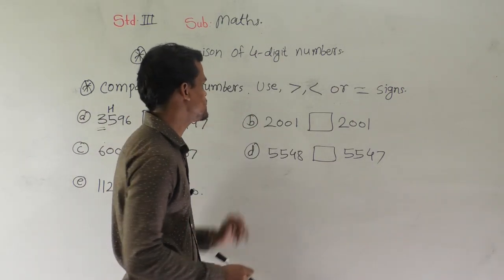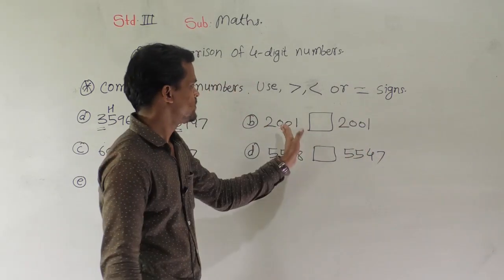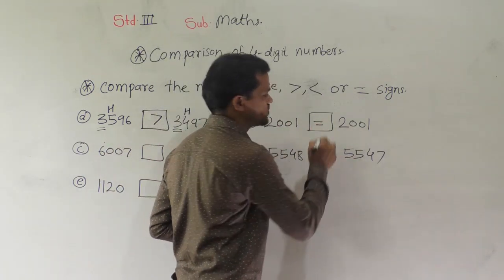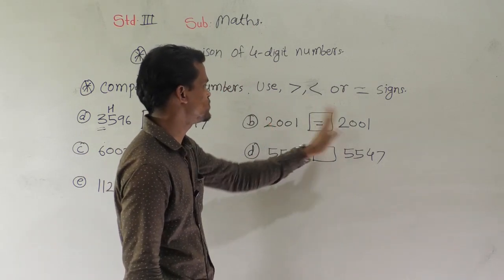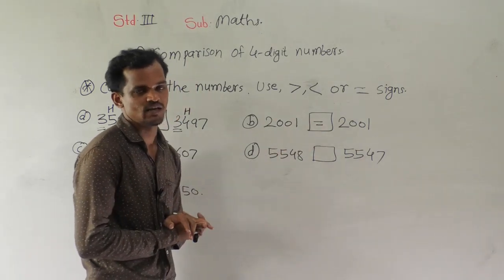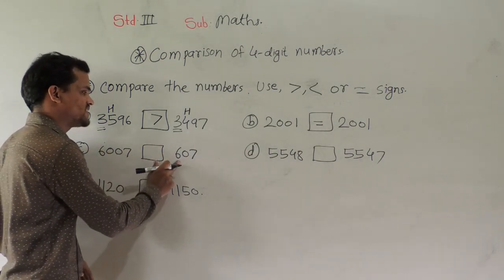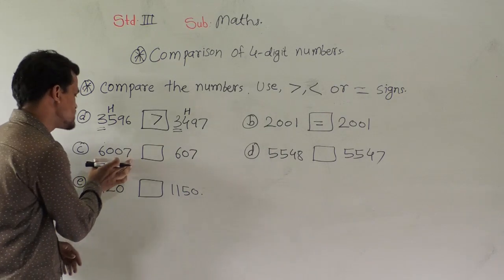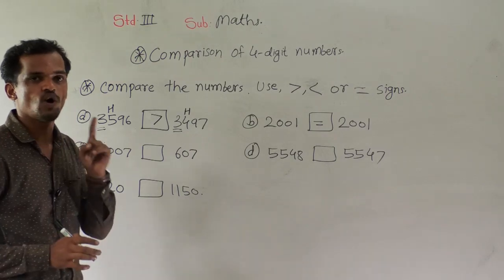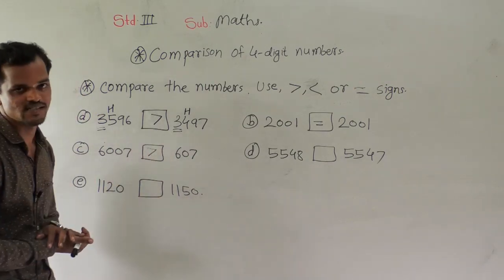Then the next example: read this number — 2001, and here 2001. These two numbers are the same, so we will use the equal to sign. Then here 6700 and 607. This is a 4-digit number and this is a 3-digit number, so a 4-digit number is always greater than a 3-digit number, so we will use this sign.